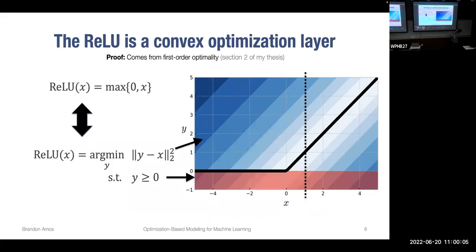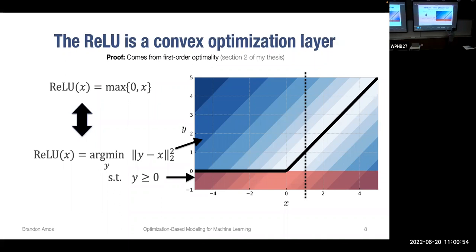The ReLU can be written as rectification of a linear function with zero — it's a Euclidean projection onto the non-negative orthant: min ||y - x||² subject to y ≥ 0. This is a convex optimization problem, and it can be proven from first-order optimality. The main point is that this is conditional on the input X, allowing us to compute this non-linear function using convex optimization as part of the model.